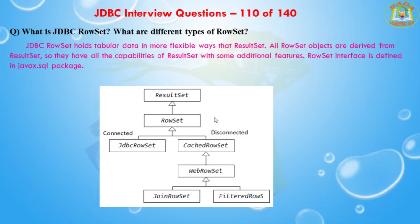The first question is: what is the JDBC RowSet and what are the different types of RowSets? A JDBC RowSet holds tabular data in a more flexible way than a ResultSet. All RowSet objects are derived from the ResultSet, so they have all the capabilities of the ResultSet with some additional features. The RowSet interface is defined in the javax.sql package.